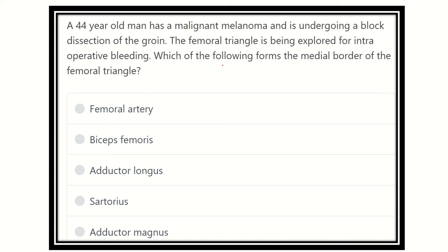The key point of this question is identifying the medial border of the femoral triangle — which structure forms it? The options are: femoral artery, biceps femoris, adductor magnus, sartorius, adductor longus, and adductor magnus with sartorius. We need to find which structure forms the medial border.